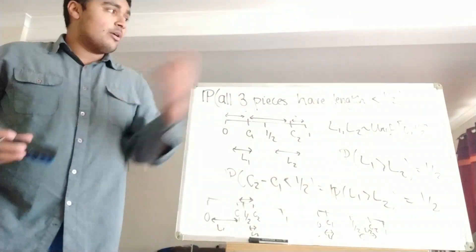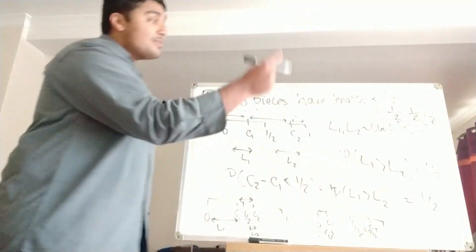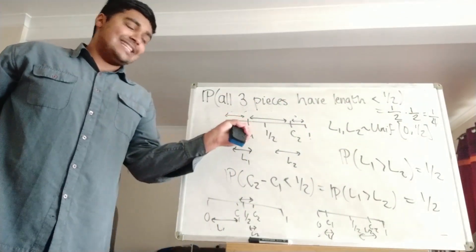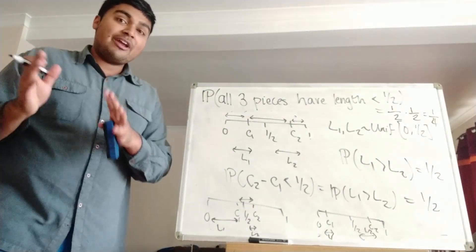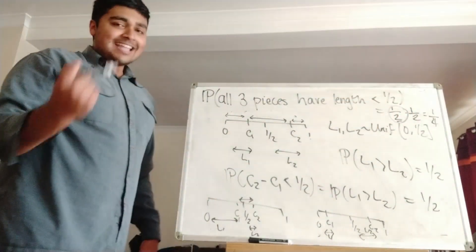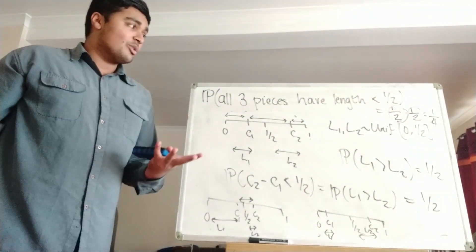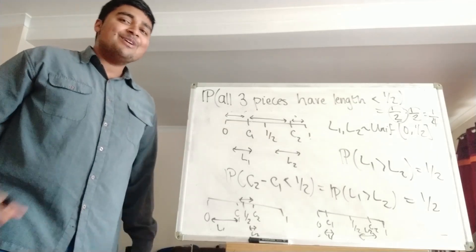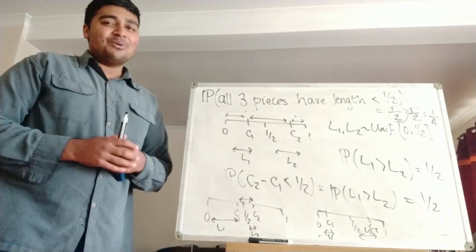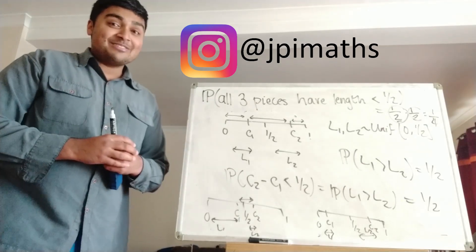So our final answer: the probability that all three pieces have length less than one half is not one half but one half times one half, which is one quarter. The first half comes from needing one cut to the left and one to the right of the midpoint. The second half comes from the fact that even given that, it's still only probability one half that the middle piece is less than one half. Multiplying these together gives one quarter. So if you take a stick of length 1, cut it at two randomly chosen places, the probability you can make a triangle is one quarter. I hope you enjoyed this video — let me know in the comments if you thought of any other solutions, because I know there are quite a few. Thanks for watching, catch you in the next one!